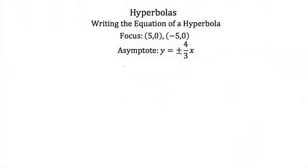Now let's try writing the equation of a hyperbola given some information about that hyperbola. We're told that the foci are at the points (5, 0) and (-5, 0), and we have the two asymptotes y equals positive or negative four-thirds x.